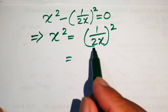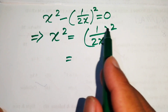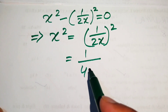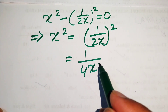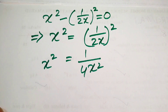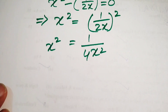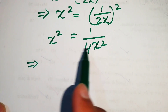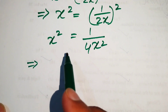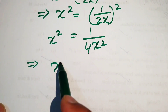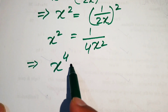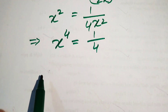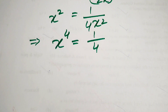Expanding the square: 1 squared equals 1 and 2x squared equals 4x squared, so we have x squared equals 1 over 4x squared. Moving x squared to the left-hand side gives x to the power of 4 equals 1 over 4.